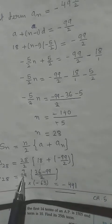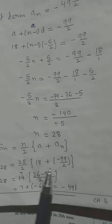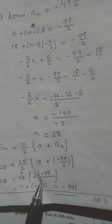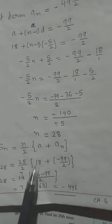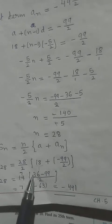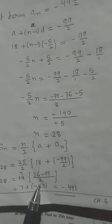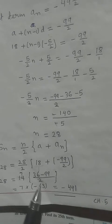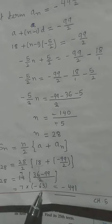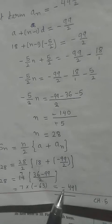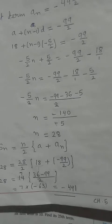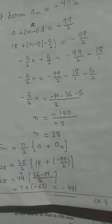Computing: S_28 = 28/2 × (18 + (−99/2)). Finding LCM for 18 + (−99/2): 36/2 − 99/2 = −63/2. Then S_28 = 14 × (−63/2) = 7 × (−63) = −441. The sum of the series is −441.